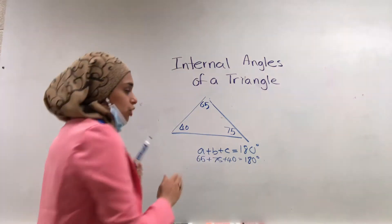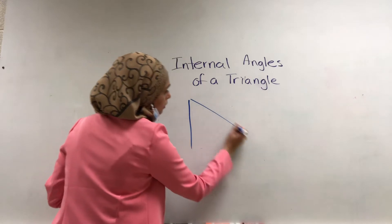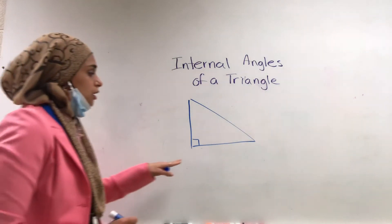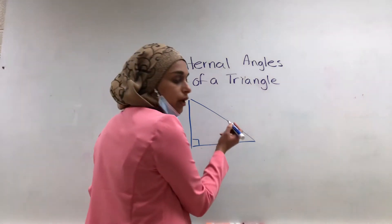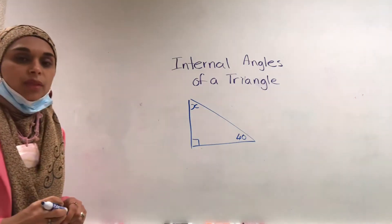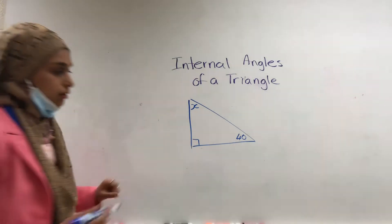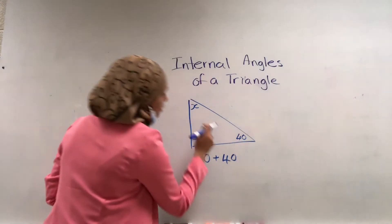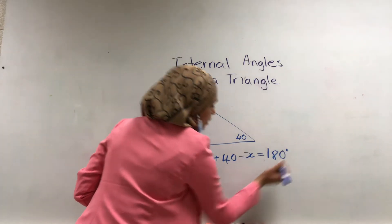Let's try some other ones. I'm giving you a right angle triangle. I'm not giving you the value of the right angle, but you should know what it is. I'm going to give you the value of this one — let's call it 40 — and label this X as my unknown. You're using your algebraic process: you know the right angle is 90 degrees, so 90 plus 40 plus X equals 180.